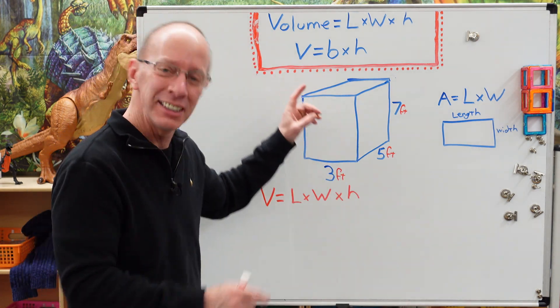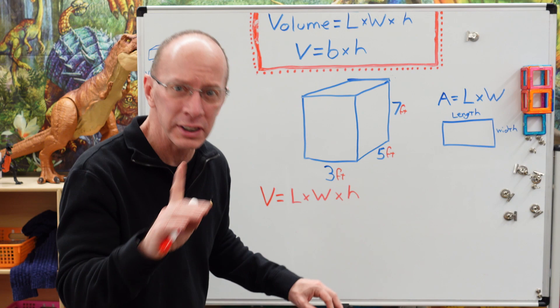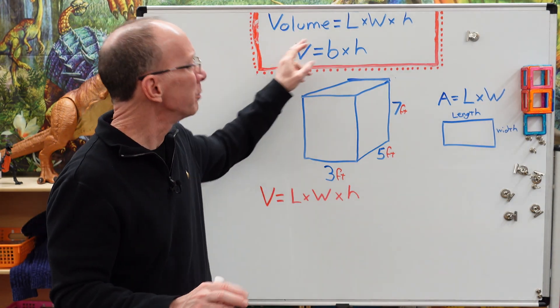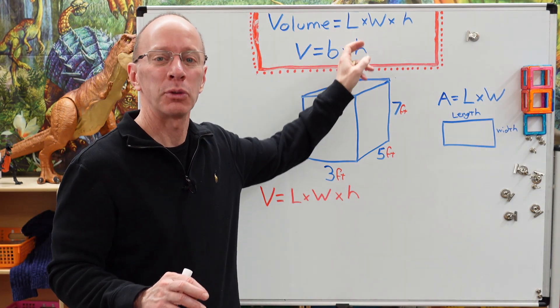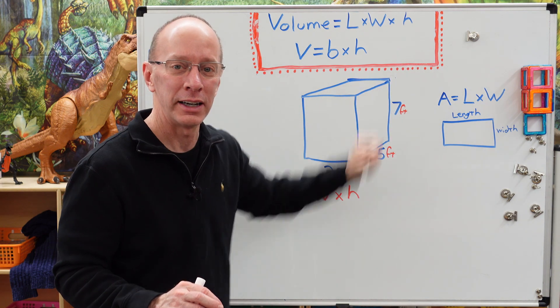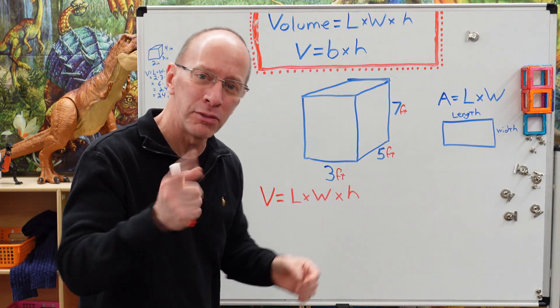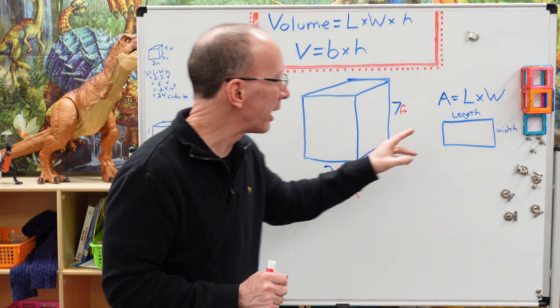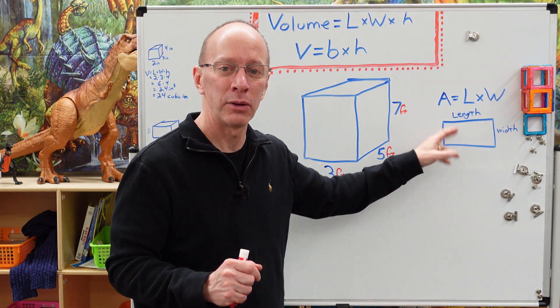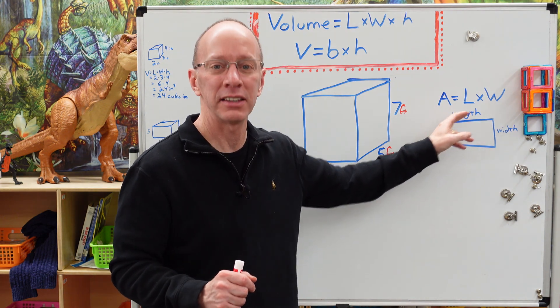All right, let's take a look at this. This is our secret formula, so don't tell anyone here. Volume equals length times width times height. All right, so if you've watched any of my other videos, I talked about what an area of a rectangle is, and that is length times width.